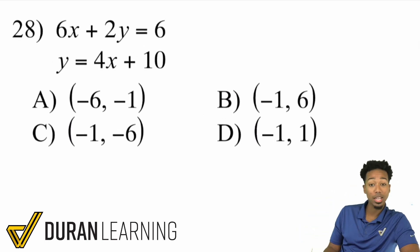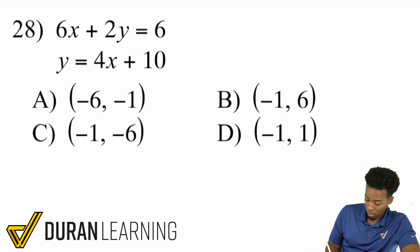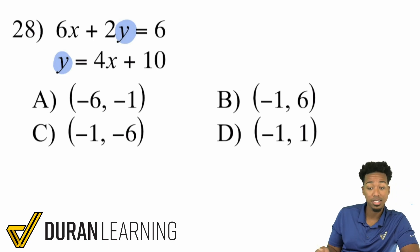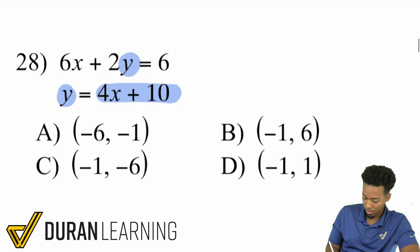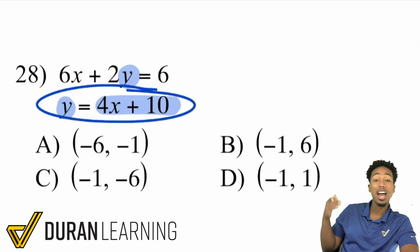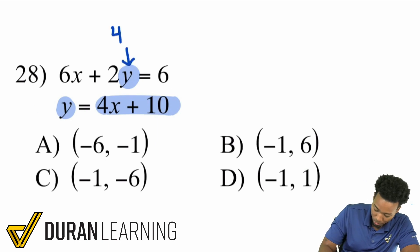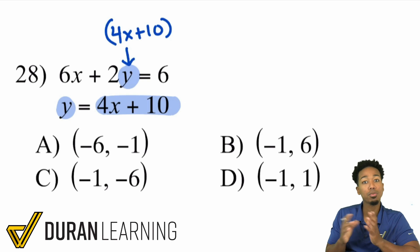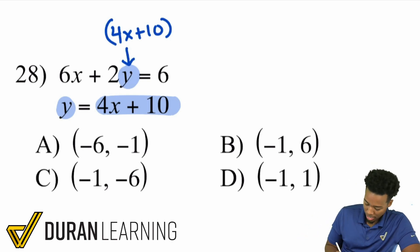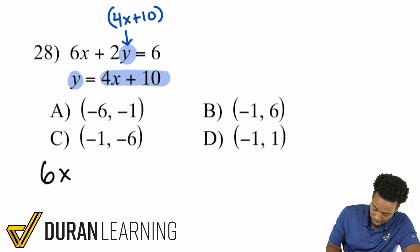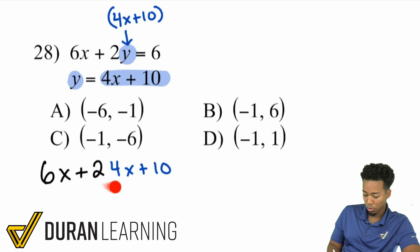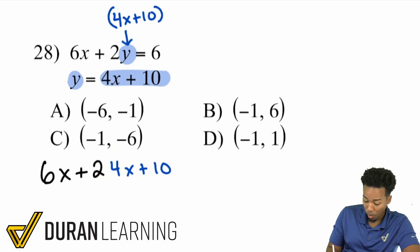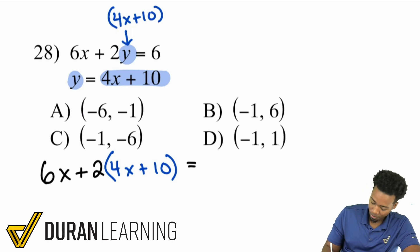For number 28, we have 6X plus 2Y equals 6, and Y equals 4X plus 10. These Y's are the same, so I'll replace the Y in the top equation with 4X plus 10. Make sure to use parentheses so you're multiplying the 2 by the entire expression — both terms. Without parentheses, it looks like you're only multiplying by 4X, but you need to distribute to both 4X and 10.